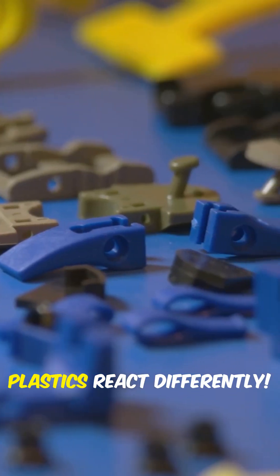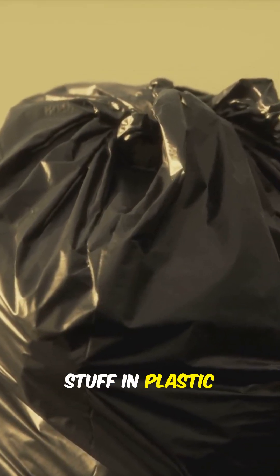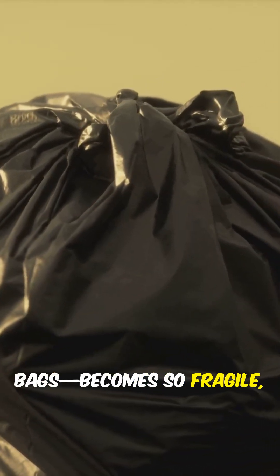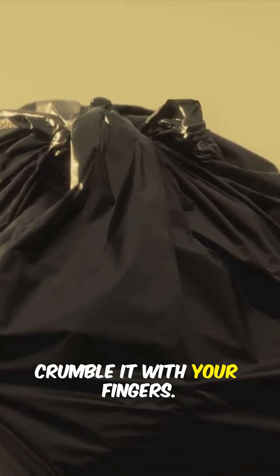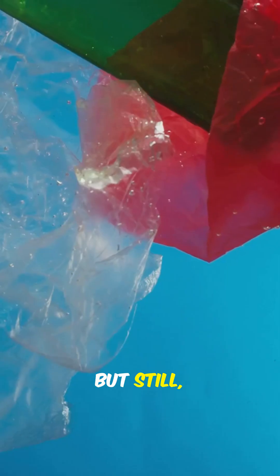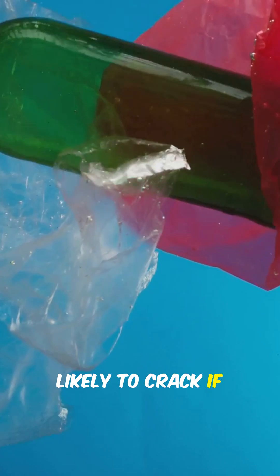Here's the cool part. Different plastics react differently. Some, like polyethylene, the stuff in plastic bags, become so fragile you could probably crumble it with your fingers. Others, like polycarbonate, might hold up a little better, but still, they're way more likely to crack if you drop them.